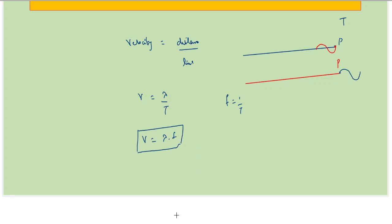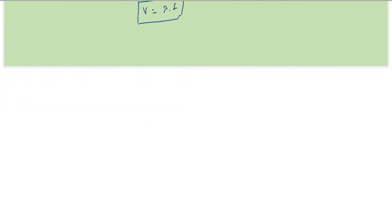This is for a medium. In case of free space or vacuum, you can write c equals f times lambda, where c is the speed of light in vacuum, and that value is a constant: 3 times 10 to the power 8 meters per second.